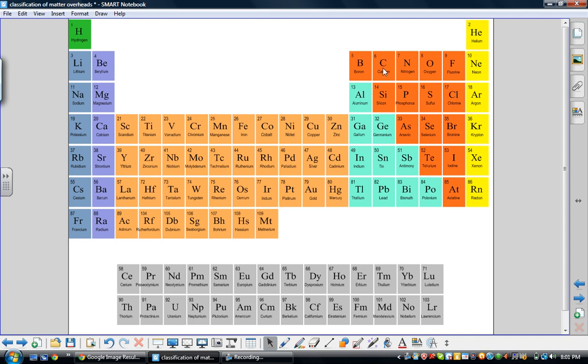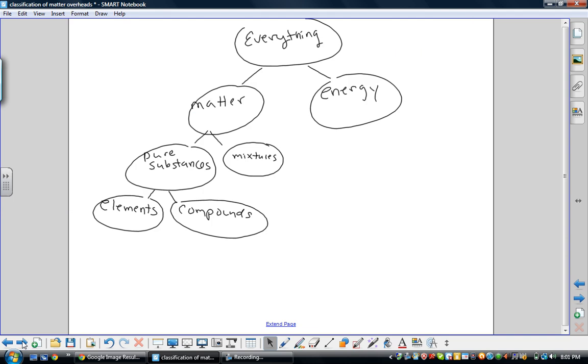What the students need to know right now is that the symbols for each element begin with a capital letter. If there's only one letter, it's just one capital, like B for boron. If there's two letters, the second one is lowercase, like Al or Cu. We're going to talk a lot more about the periodic table in later chapters, but this is what's important for right now.